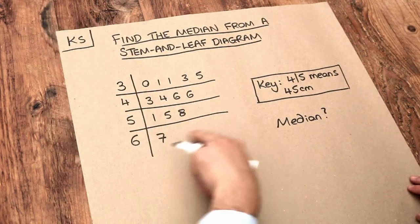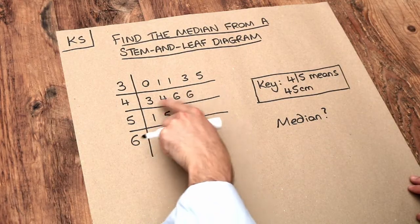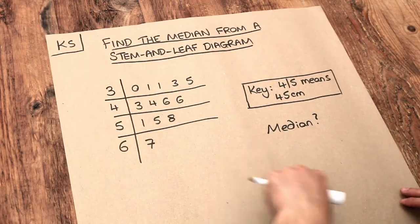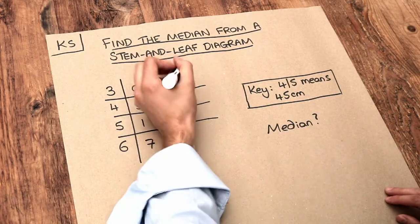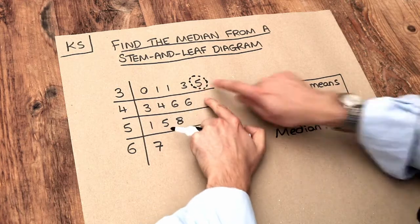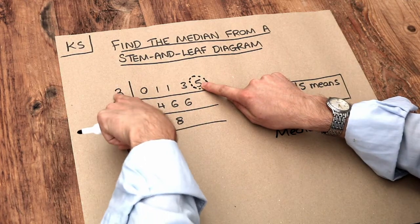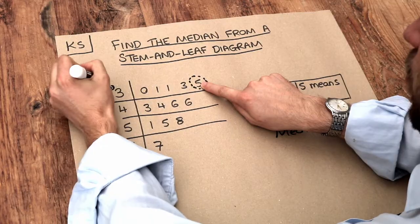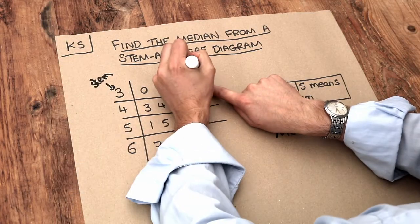Now conveniently a stem and leaf diagram like this has its values in ascending order. And just to remind you how we read a stem leaf diagram, if we had this value here, we use this digit combined with this number on the left. So that's known as a stem which gives you the first digit, and that value there is known as a leaf which is the second digit of your number.